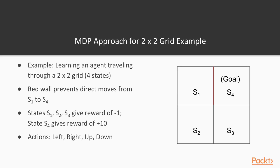Here is our familiar 2x2 grid world. We've looked at several ways to solve this, and now we're going to use MDP. There are four states. You cannot go through the red wall between S1 and S4. You can't go outside the boundary. There are rewards of minus 1 in states 1, 2, and 3, and state 4 has a reward of plus 10. You can try to execute the actions left, right, up, or down, whichever state you are in.